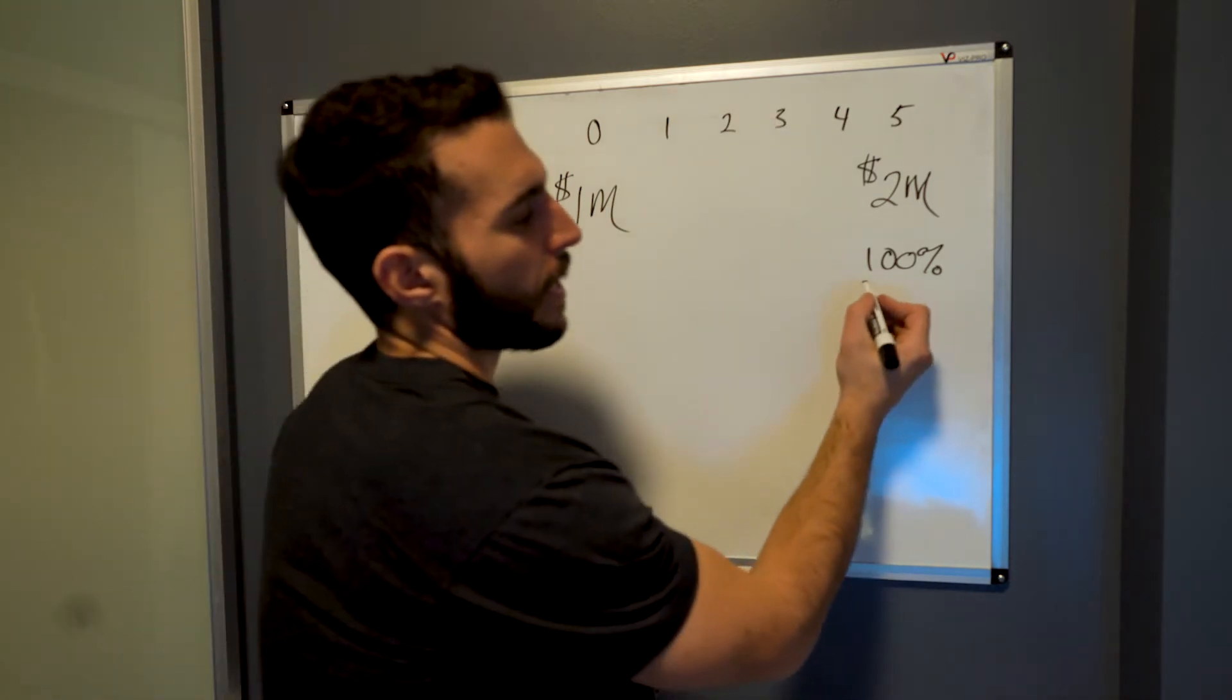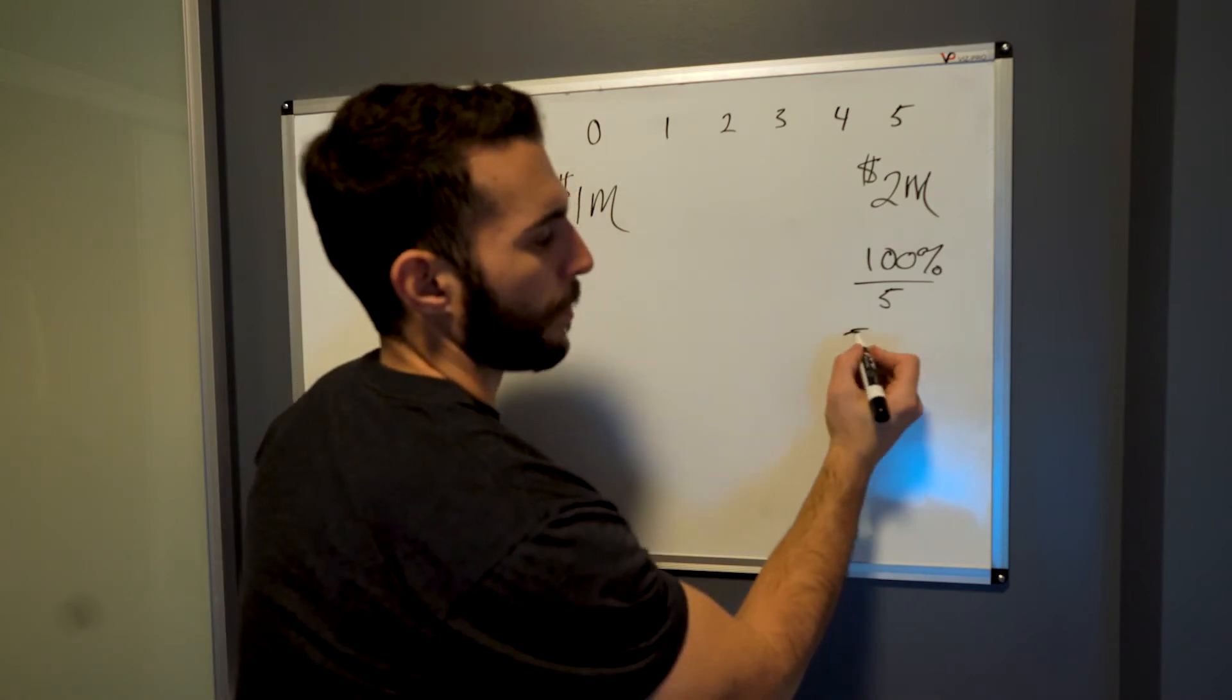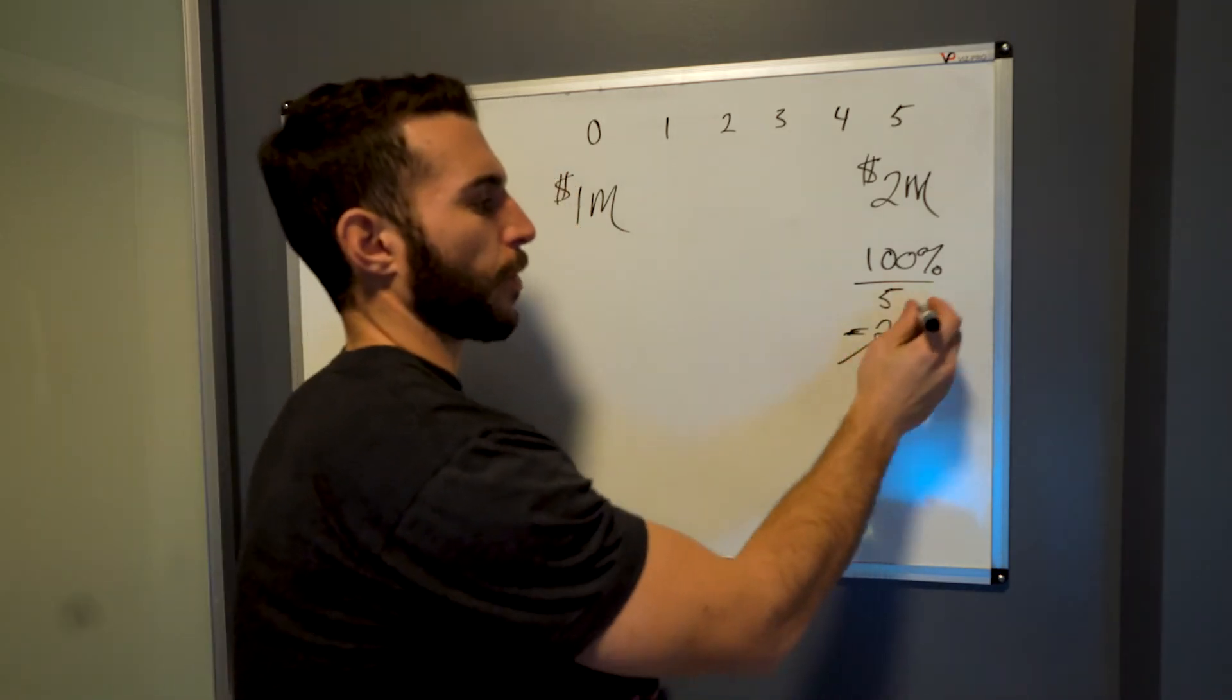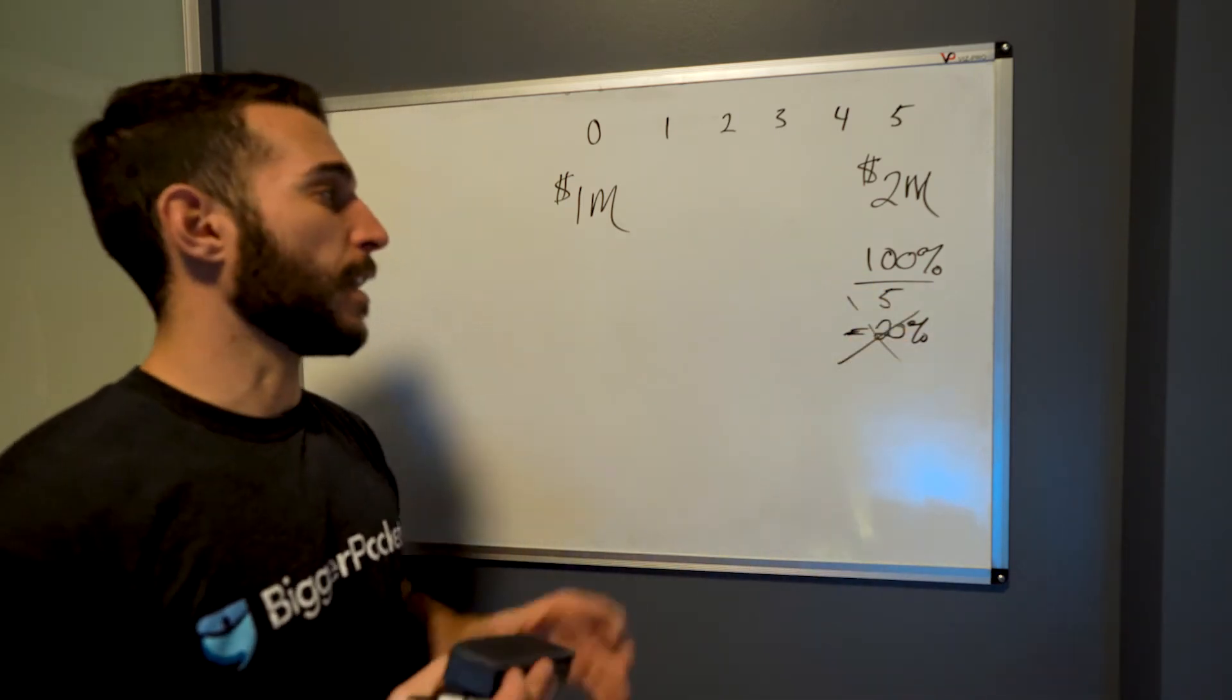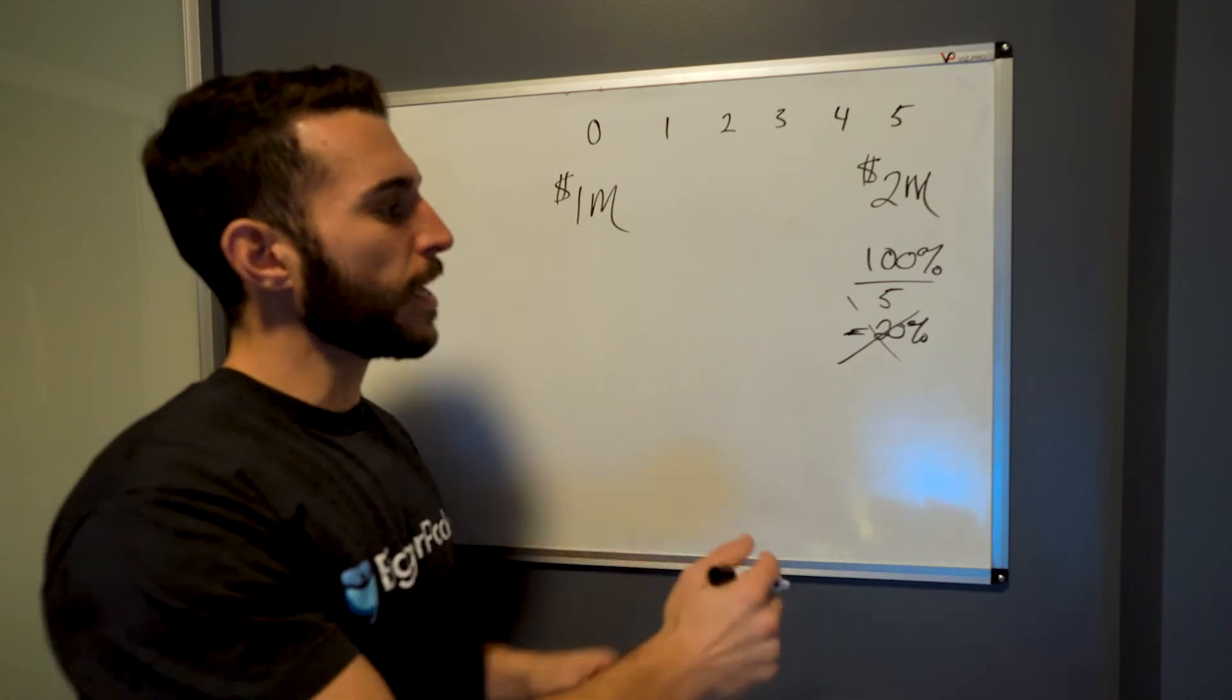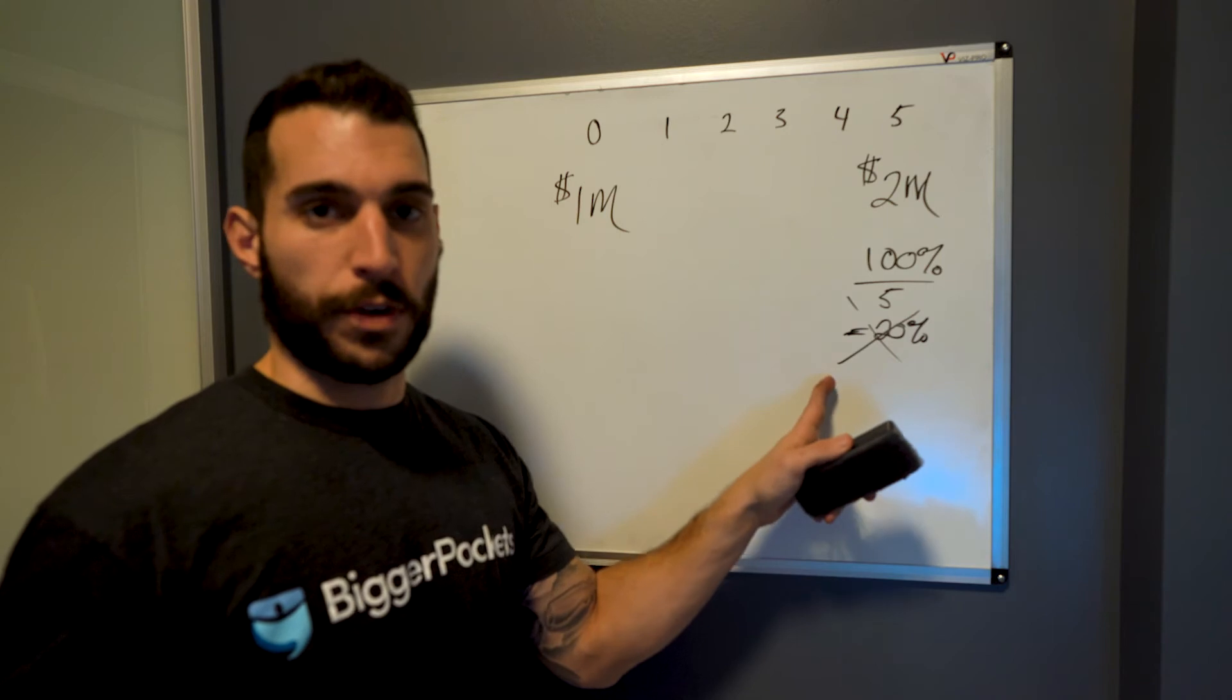But then what they do is they divide it by the number of years that they've had the investment and they go, okay, beautiful 20% annual return. Incorrect. That's not how we get an annual return because what we're not taking into account when we do this is the compounding nature of that return. And this is actually inflating the return.